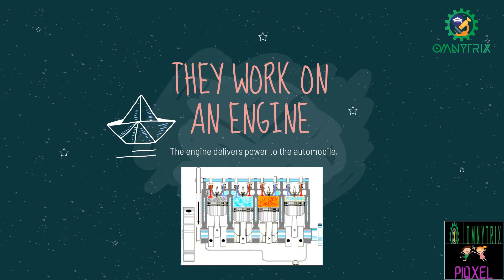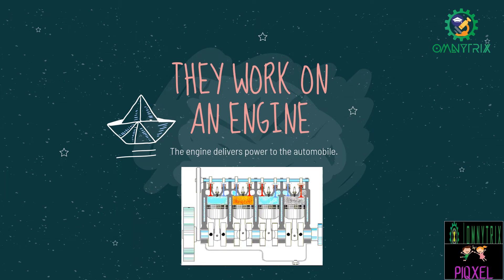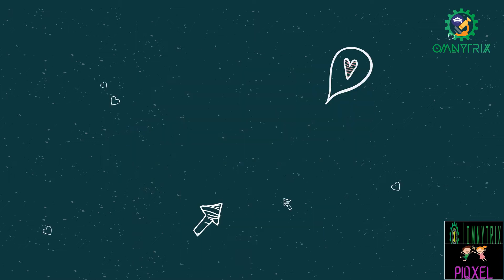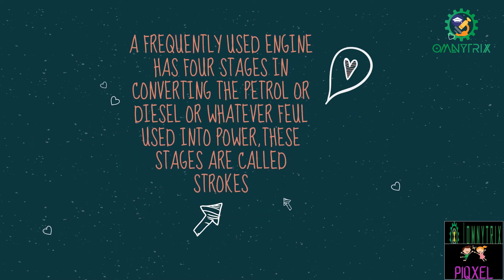The engine delivers power to the automobile. In other words, engine is a machine which converts power into motion. Here's a picture of a working engine. A frequently used engine will usually have four stages in converting the petrol, diesel or whatever fuel will be used into power.